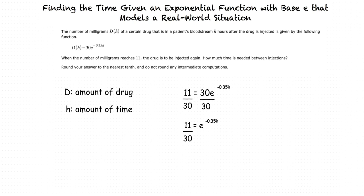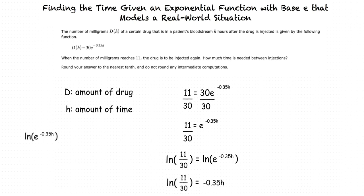How do we get rid of the E raised to an exponent? Whenever we have E raised to some power and we want to get rid of that E in the base to solve for something in the exponent, we can take the natural logarithm of both sides of the equation. So natural log of 11 over 30 equals natural log of E to the negative 0.35H. When we simplify this, we see that natural log of 11 over 30 is equal to negative 0.35H.